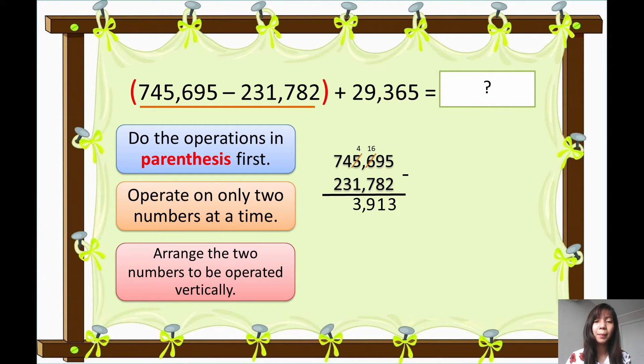4 minus 3 is 1. 7 minus 2 is 5. And then, so after you get the answer from this problem, then proceed to here. So answer 513,913.